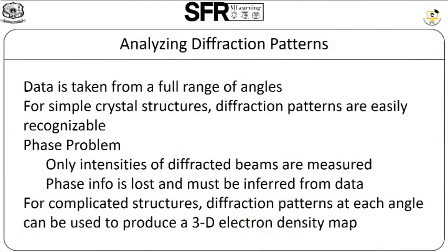Analyzing diffraction patterns further: data is taken from a full range of angles from the graph. For simple crystal structures, diffraction patterns are easily recognizable. We have to find the phase problem — only intensities of diffracted beams are measured, so phase information is lost and must be inferred from data. For complicated structures, diffraction patterns at each angle can be used to produce a 3D electron density map.